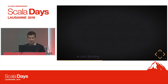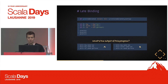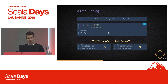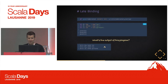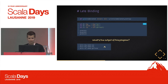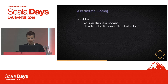Unlike ad-hoc polymorphism, subtyping has late binding. Looking at the same example from before: in this case the compiler is not looking at the Animal type declaration but at the concrete type that is provided. So the output will be different from before — the second method call will also output the greeting for Dog. In summary, Scala has early binding for method parameters and late binding for the object on which the method is called.